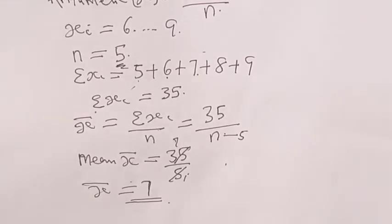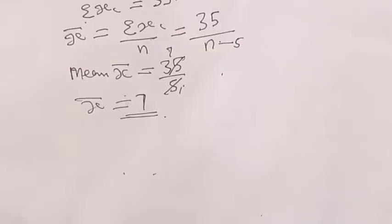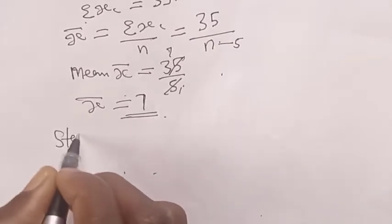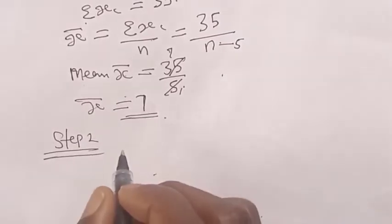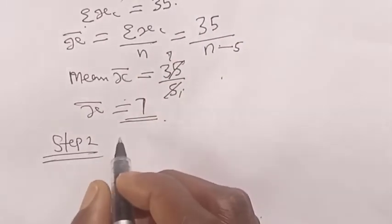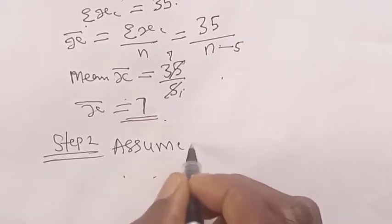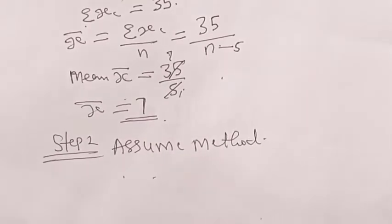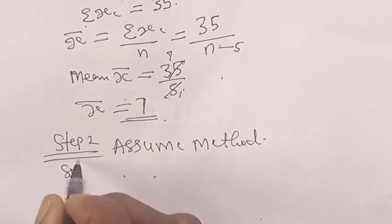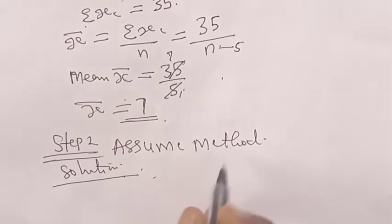But the second method we are going to consider, which is step 2, is referred to as assumed mean method. Now, step 2. We want to compute the arithmetic mean of the following set of data using assumed mean method. Solution.